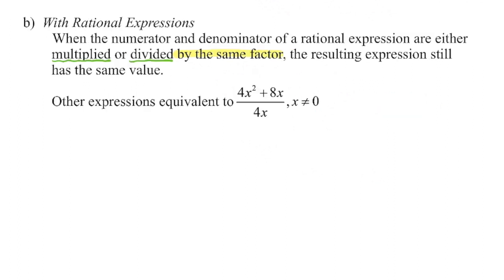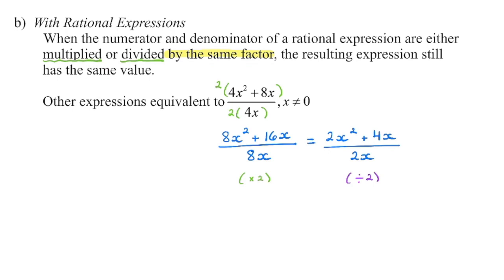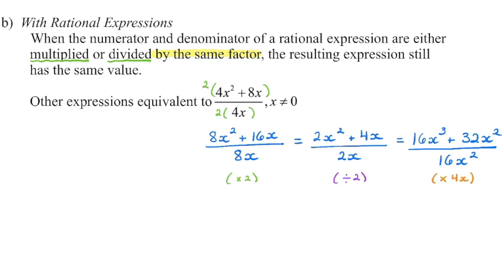Similarly, if I have a rational expression, I have to multiply the numerator and the denominator by the same factor. It can be either a number or a variable or both in order to get an equivalent expression. For example, I'm going to multiply every term by two and we can end up with this. I can divide every term by two and end up with this. Or I could multiply all three of the original terms by 4x and end up with this. All three of these expressions are equivalent to each other. They're also equivalent to the original expression. Make sure that you're dividing or multiplying every single term by the same number or variable or both and you will have equivalent expressions.